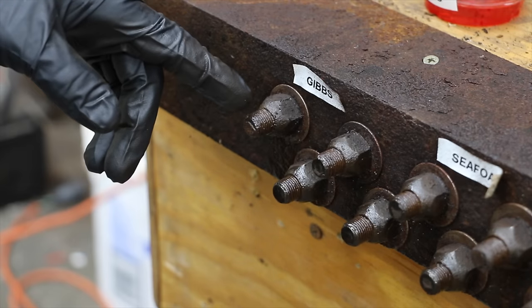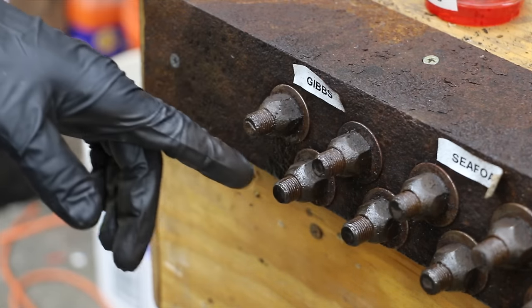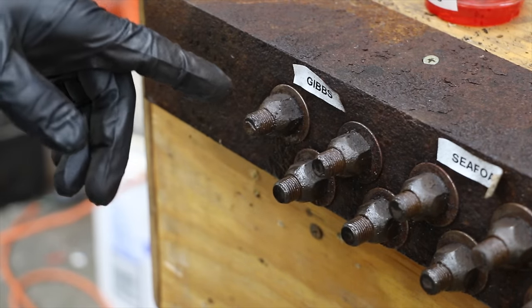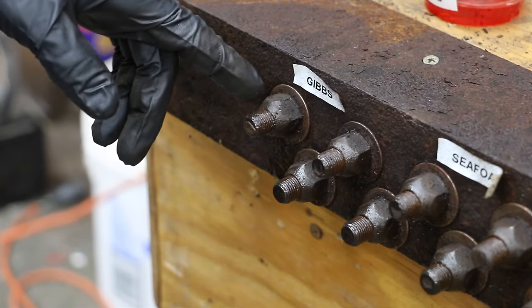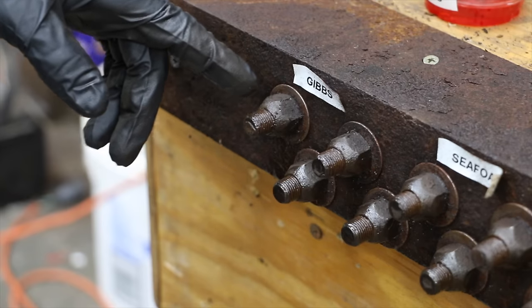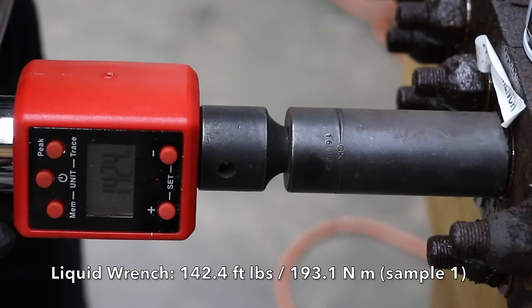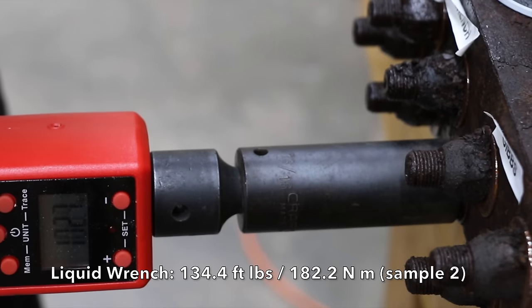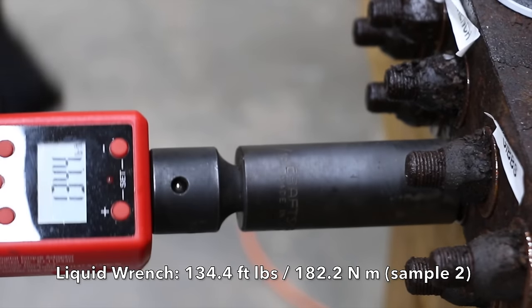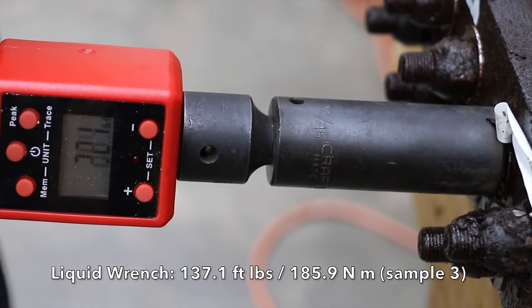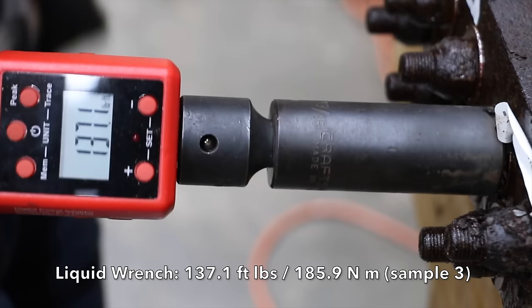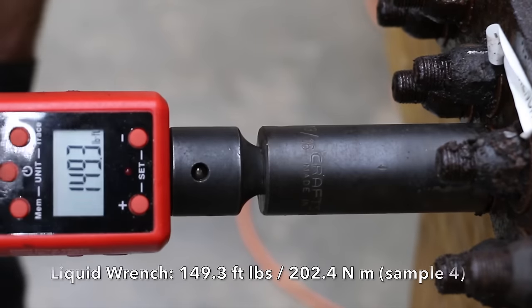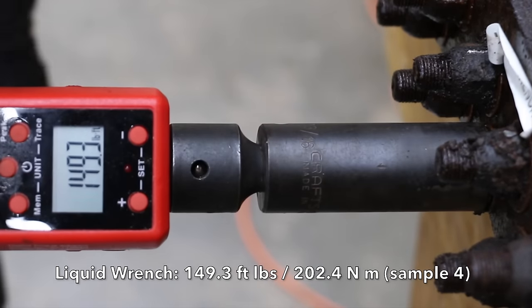It's been right at 24 hours since the penetrating oils were applied. They were applied a total of three times. So let's get the testing underway to see if the extra time helps these penetrating oils do a better job. The first bolt broke free at 142.4. The second bolt broke free at 134.4. The third required 137.1. The fourth needed 149.3.